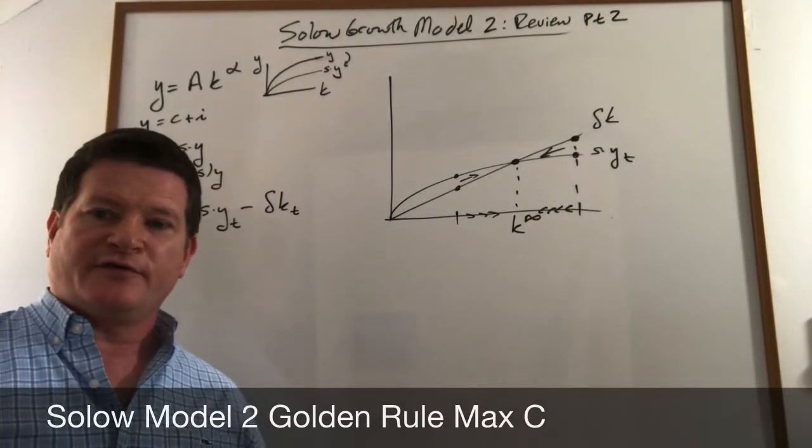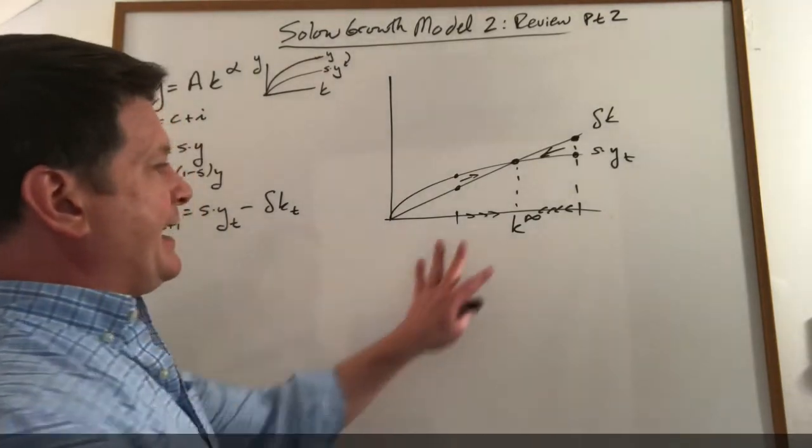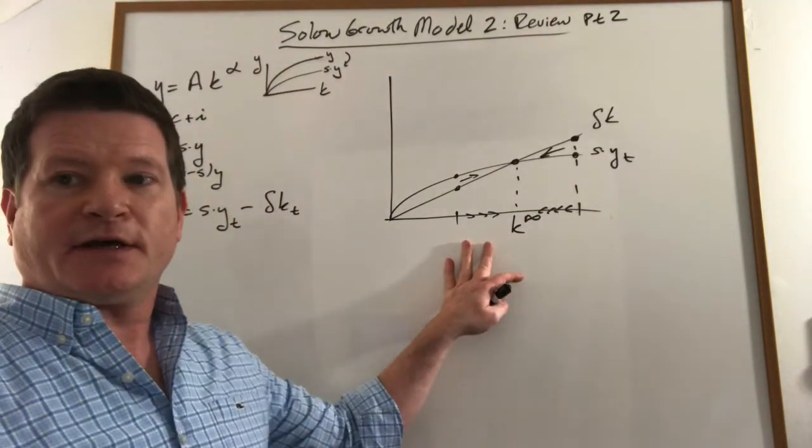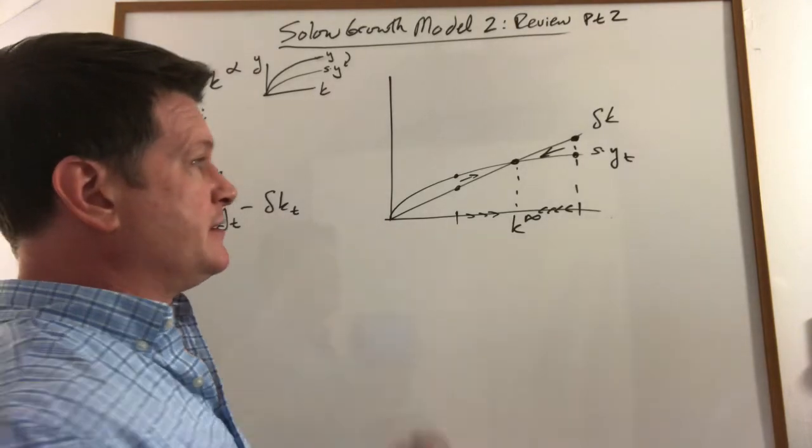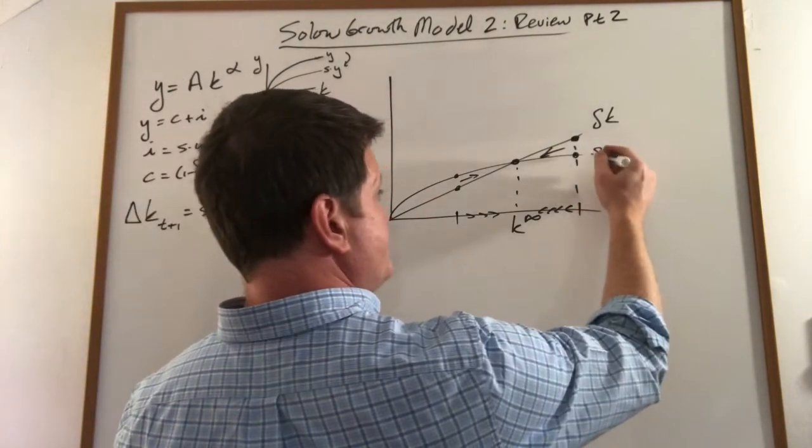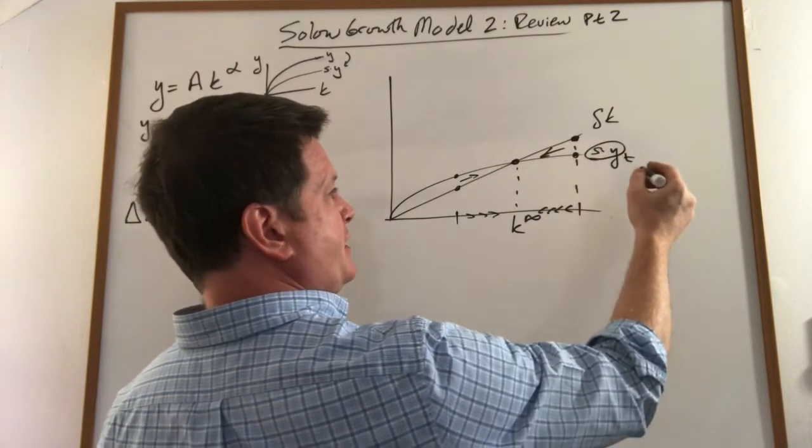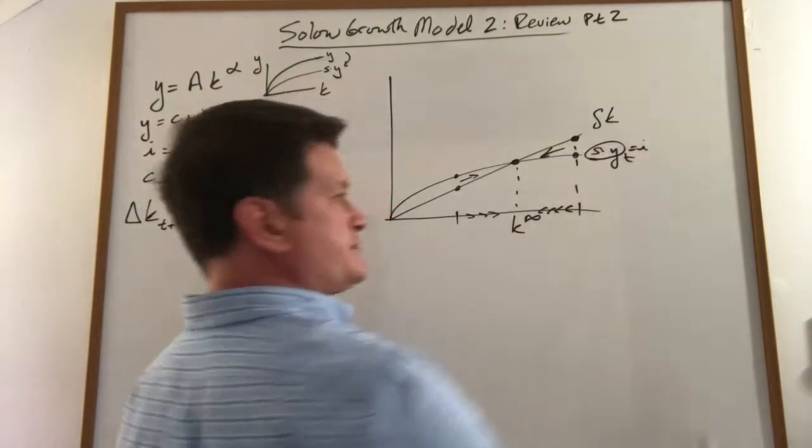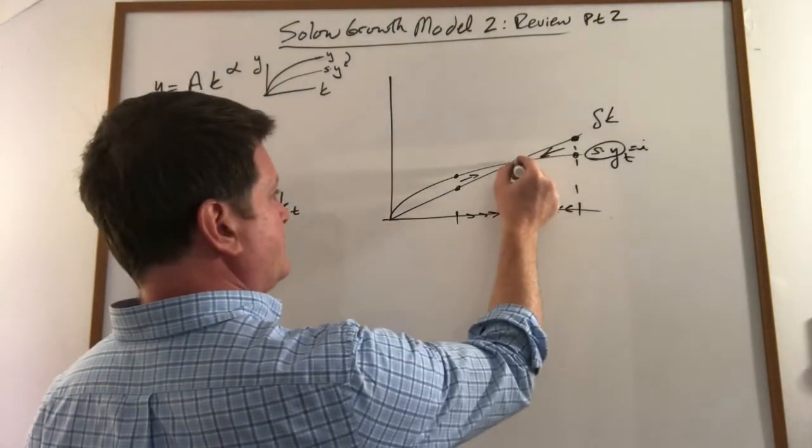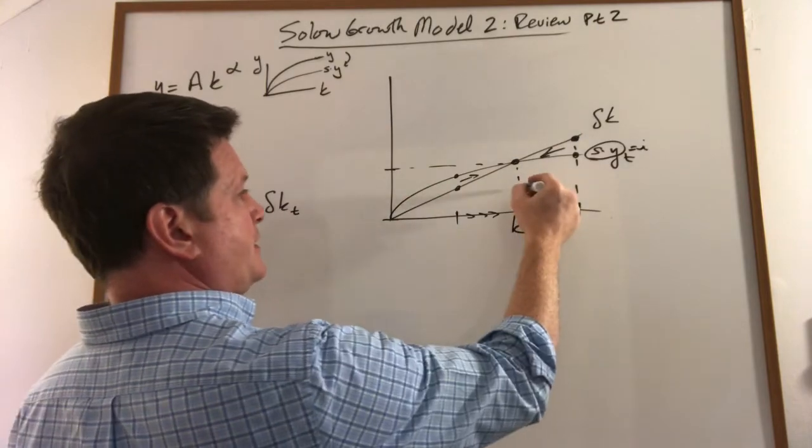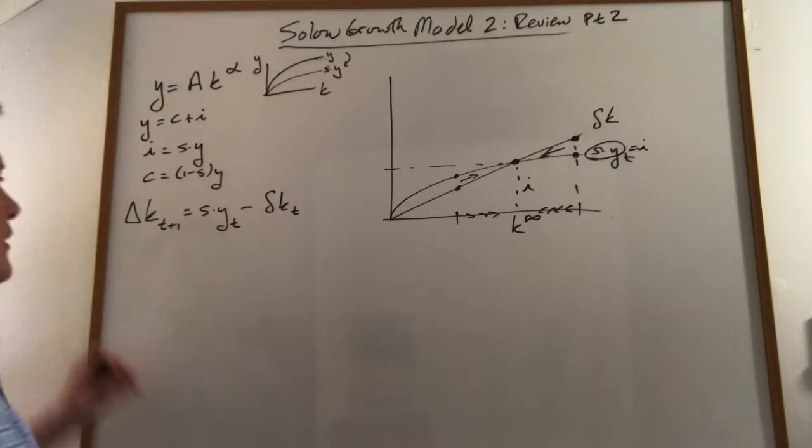This lecture continues with the review of the Solow growth model. Here I just want to add how to find consumption and investment. Remember this line: S times Y is our total savings in the economy, which is equal to our total investment in the economy. So the distance from here to here is our total investment in this economy.